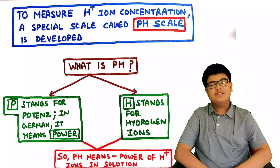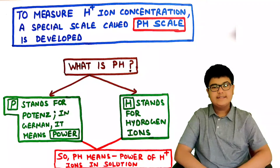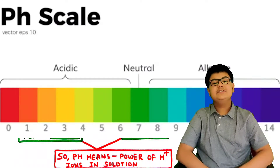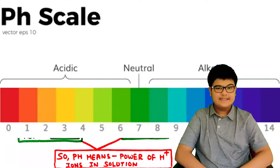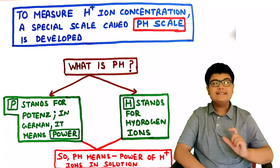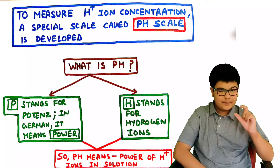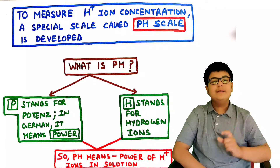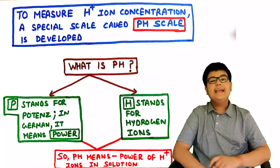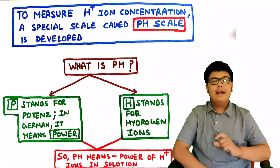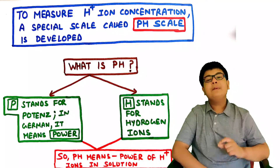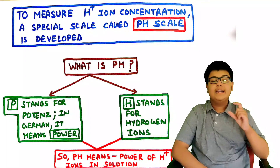To measure the concentration of H+ ions, a special scale known as the pH scale is used. In pH, the 'p' stands for 'potenz', which is a German word meaning 'power' in English, and 'H' stands for hydrogen ions. So the word pH means 'power of hydrogen ions'.